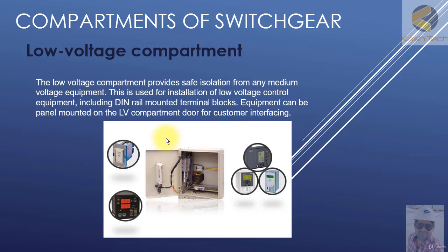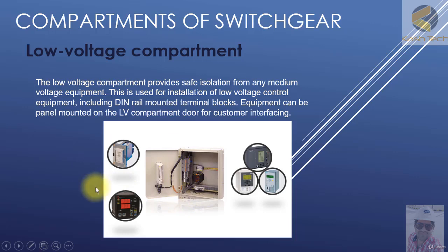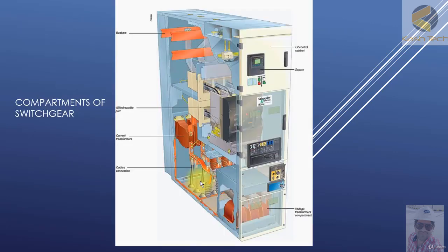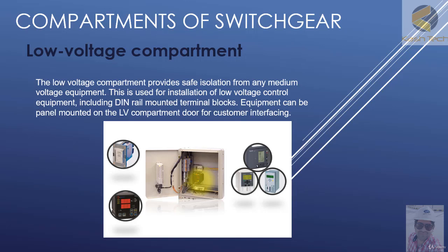After that, we will see what is included in the low voltage compartment. The low voltage compartment includes the control and protection circuitry, space heaters, and measurement devices like energy meters and voltmeters.